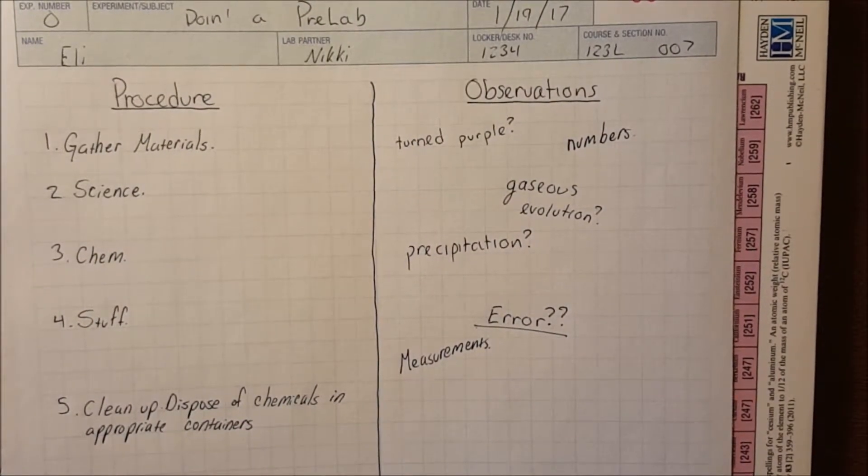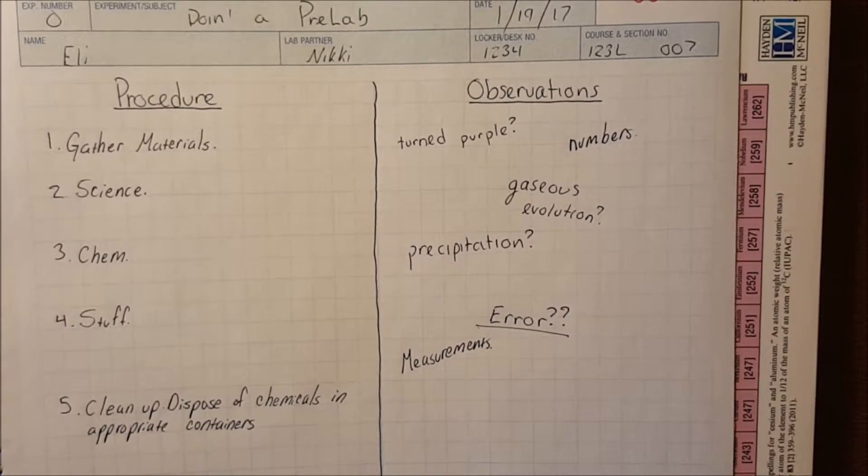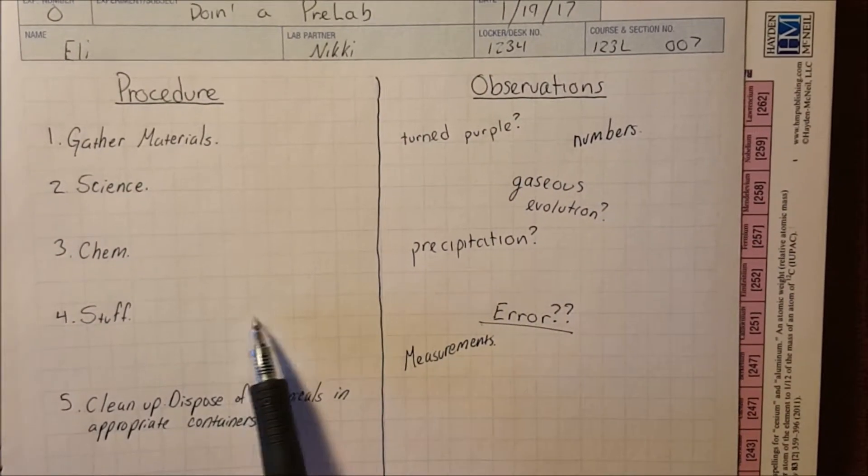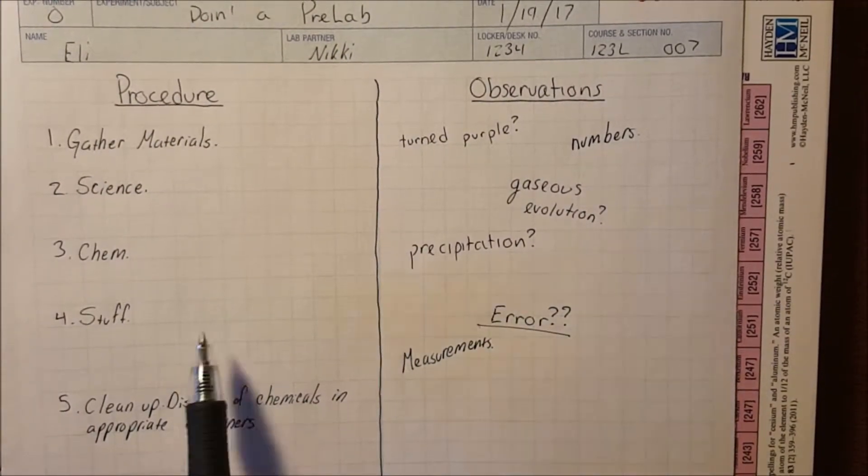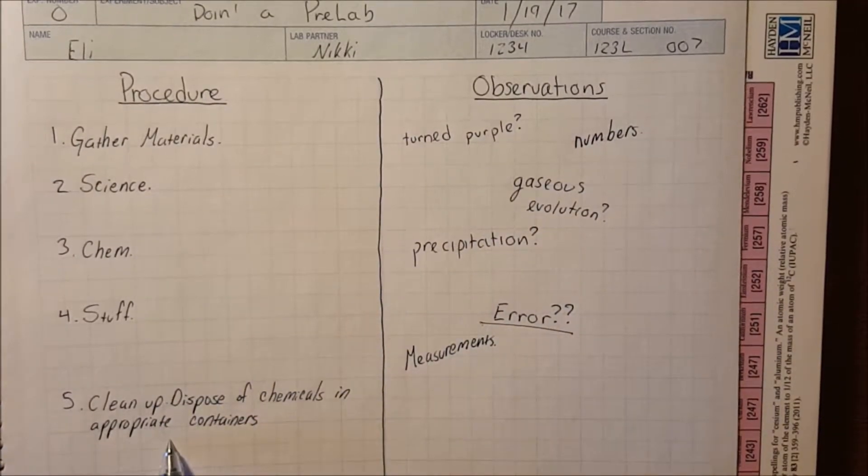Also done before lab actually starts is the procedure. This information you will get from the lab manual and the videos found on LEARN. This section is unique in the way it is formatted. Split the page in half and on the left side you will have your procedure, where you will write step-by-step how you will complete the experiment.